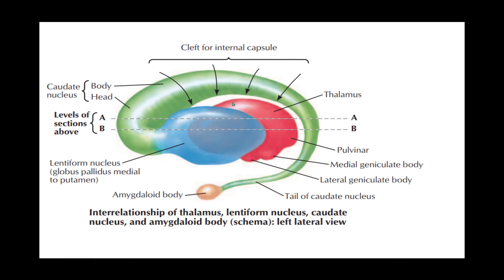The thalamus has a pulvinar, which is the posterior projection, and the medial and lateral geniculate bodies.